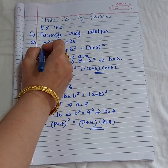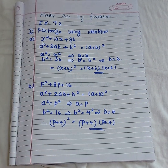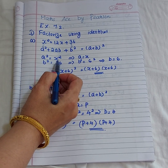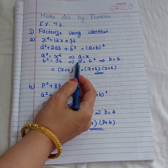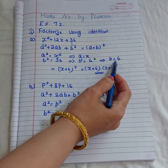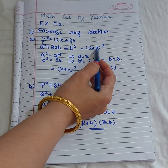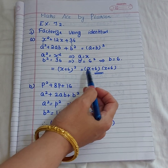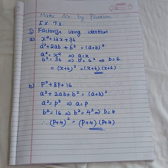Comparing x² and a², we get a² = x², which implies a = x. Similarly, b² = 36, which implies b² = 6², so b = 6. Substituting the values, you get (x + 6)², which can also be written as (x + 6)(x + 6). Our next question is p² + 8p + 16.